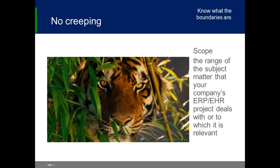Know what the boundaries are, and there's no creeping outside those boundaries — and by boundaries, we're talking about scope. Scope is defined as the extent of the subject matter that your implementation is going to cover. But I think the second part of the definition of scope is the extent of the subject matter that the implementation is not going to cover also. So many times when we are working with project teams, the scope is defined, but what we're not going to do is not defined, so we keep asking: is that really within scope? If you decide what you are going to do and what you aren't going to do, creeping cannot happen.